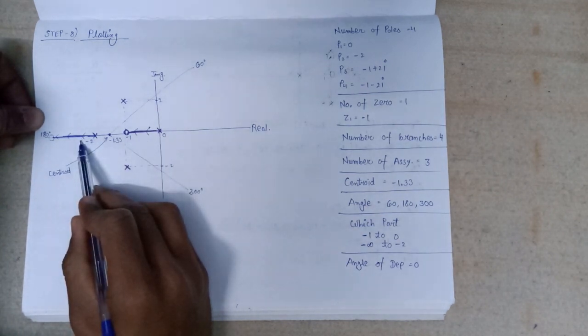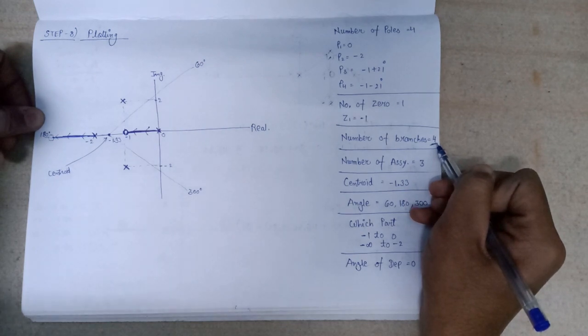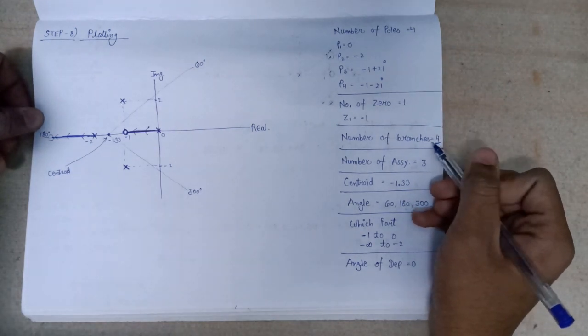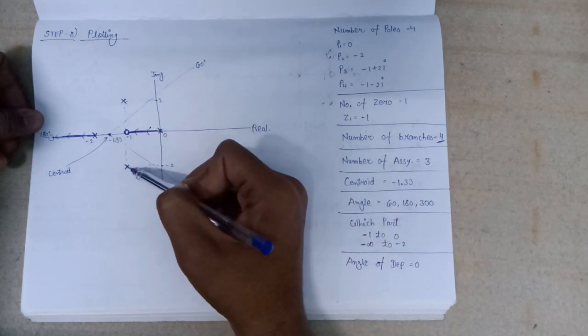So this is all about the two branches of root locus. Since the total number of branches of root locus is equal to 4, so we have to talk about remaining two branches that will arise from this pole and this pole.